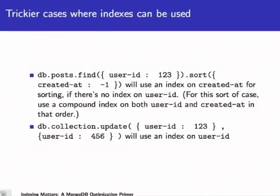There are trickier cases. A query like db.post.find where user_id is in [1,2,3], sorted by created_at descending, will use an index on created_at for sorting even if there's no index on user_id. Keep in mind that in the shell, the .sort is a separate method call, but the conditions in find and the sort are all executed as a single query on the server. When doing an update, the query portion to select the document also uses an index on user_id.